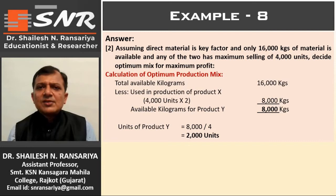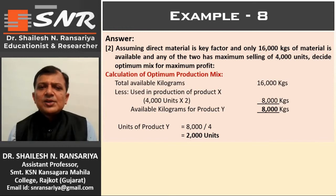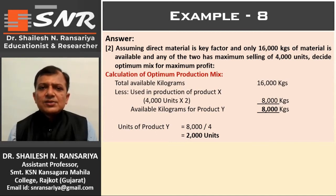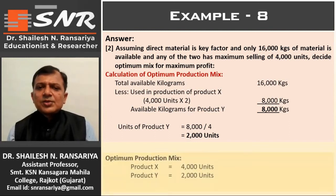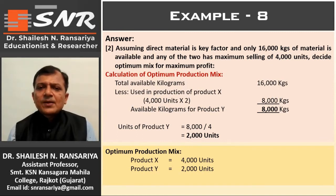Total available kilograms: 16,000. Less used in production of Product X — company can produce maximum 4,000 units; per unit required kilograms is 2; so 4,000 multiplied by 2 = 8,000 kilograms used for Product X. Remaining 8,000 kilograms available for Product Y. Units of Product Y = 8,000 divided by 4 = 2,000 units. Optimum production mix: Product X 4,000 units and Product Y 2,000 units.